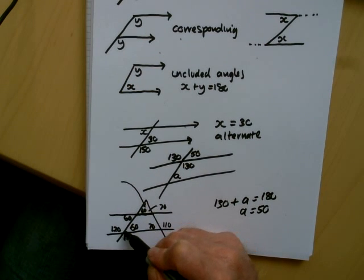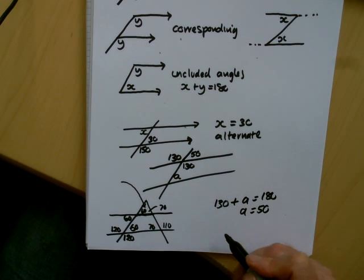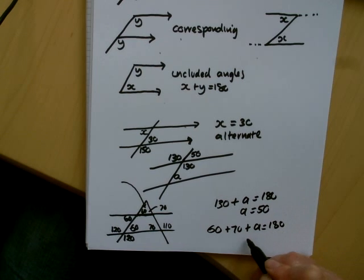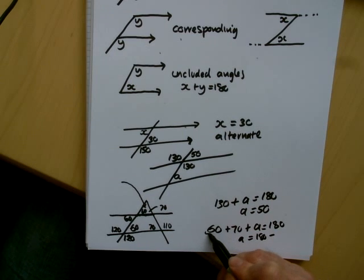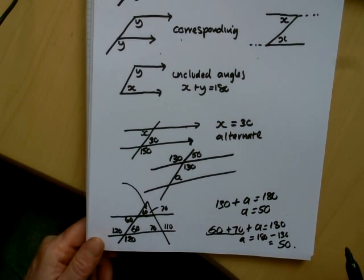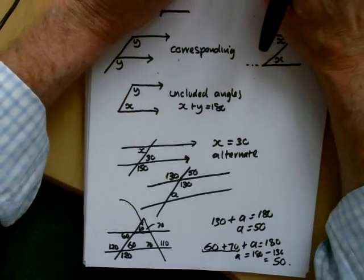At the top we have a triangle, and we also have a similar triangle — one's a smaller version of the other. So we've got 60, 70, and angle A equalling 180. A equals 180 subtract 60 plus 70. 60 plus 70 is 130, so we end up with the answer 50. So that's Angle Facts 2, using corresponding, alternate, and included angles. Thank you.